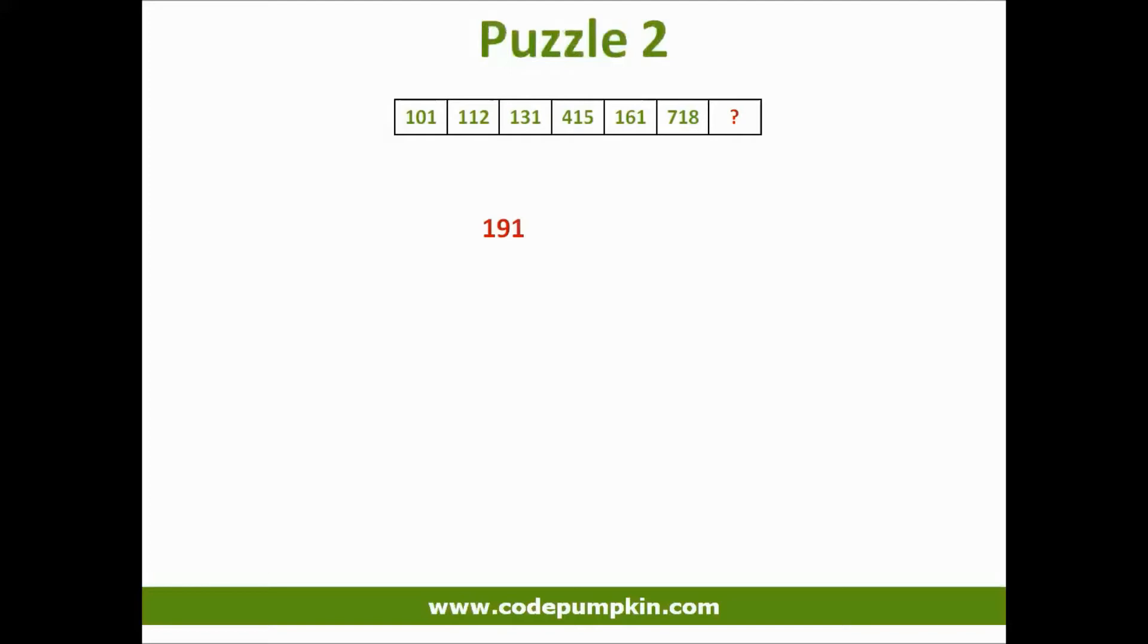many people tried to find difference between two odd elements of sequence that is 131 minus 101, that is 30. 161 minus 131 equals 30. So they gave answer as 191 because 191 minus 30 is 161.